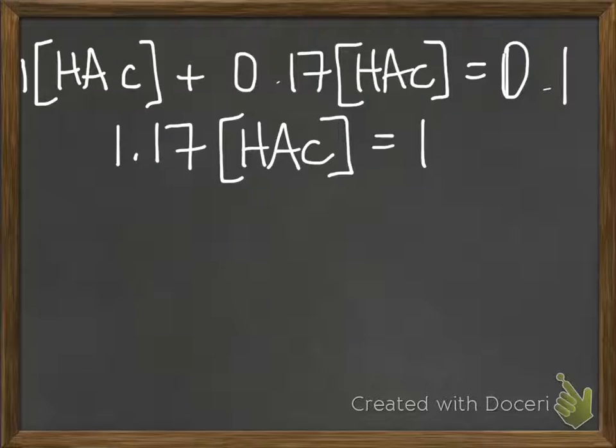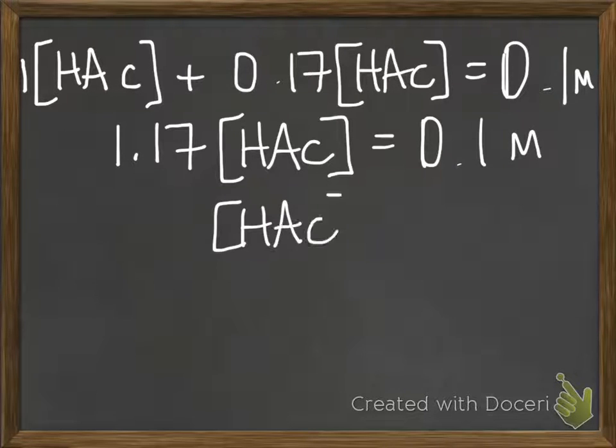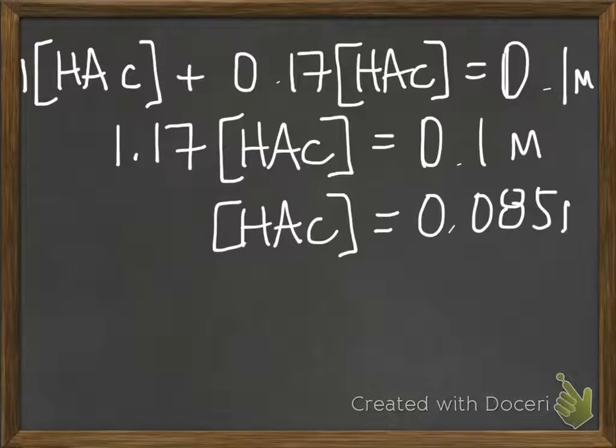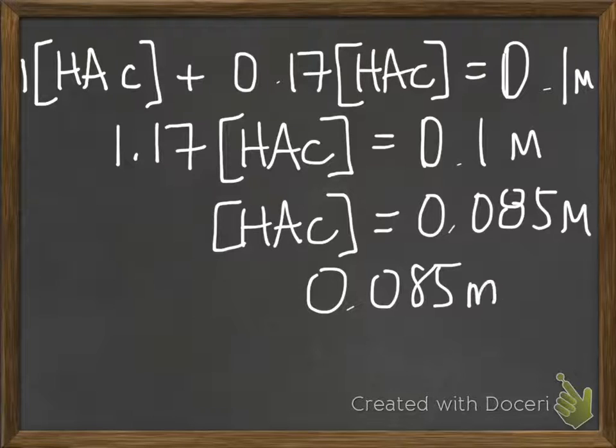Oops, this should be 0.1 molar. So the amount of acetic acid that you have is 0.085 molar. Or another way to say it is it's 0.085 moles in 1 liter.